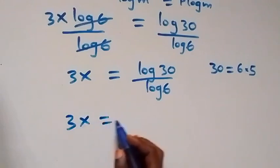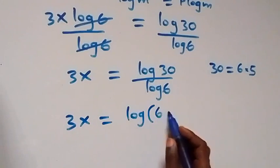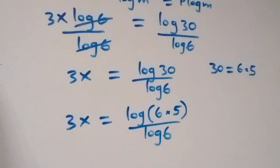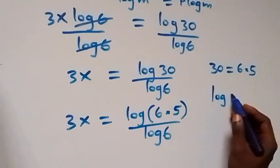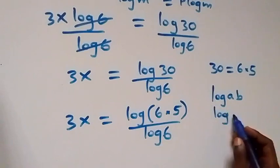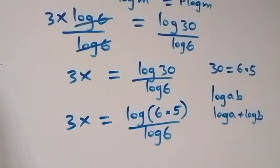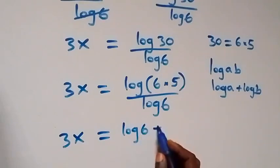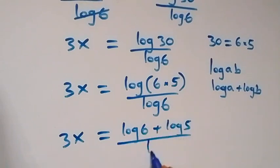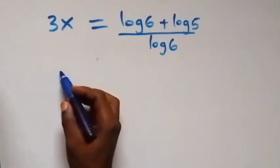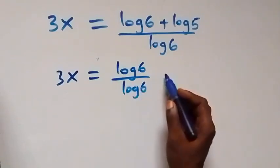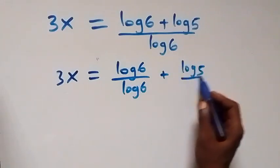We can write 30 as 6 times 5, so what we have becomes 3x equals log of (6 times 5) over log 6. Applying the logarithm product rule, log(a times b) equals log a plus log b, we get 3x equals (log 6 plus log 5) over log 6. We can then separate this into two fractions: 3x equals log 6 over log 6 plus log 5 over log 6.